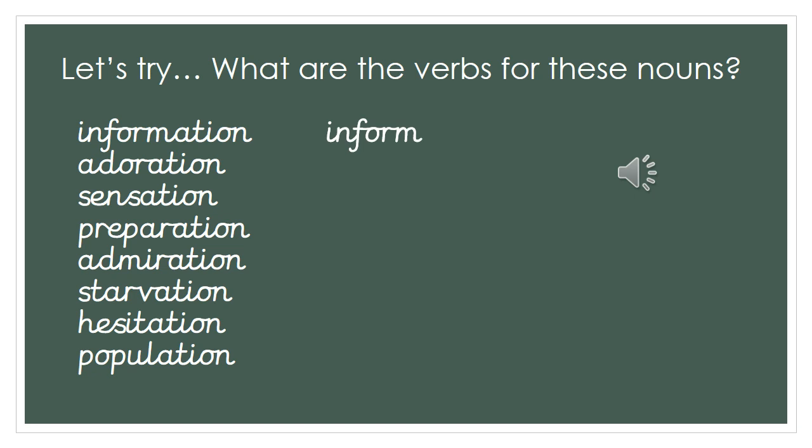What are the verbs for these nouns? Have a look at the first one: "information". Yes, the word is "inform". What about "adoration"? The noun adoration — what's the verb? If you've got "adore", well done. "Sensation" — to sense. Fantastic.